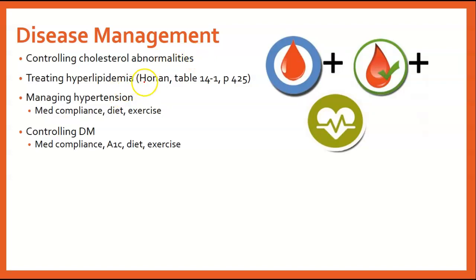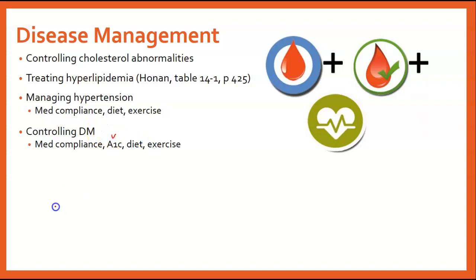Disease management involves controlling cholesterol and hyperlipidemia — there are many medications for this that we'll discuss, which you can find in your Hogan book. Managing hypertension is through medication compliance, diet, and exercise. Controlling diabetes is likewise through medication compliance, A1C monitoring, diet, and exercise.